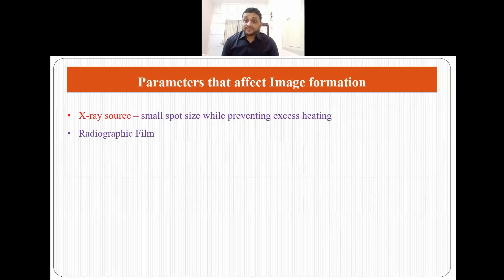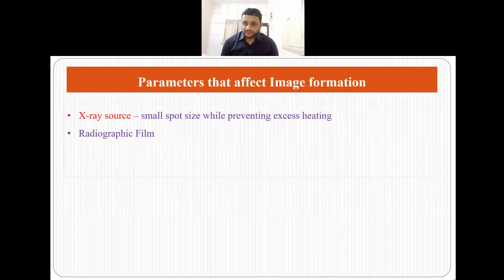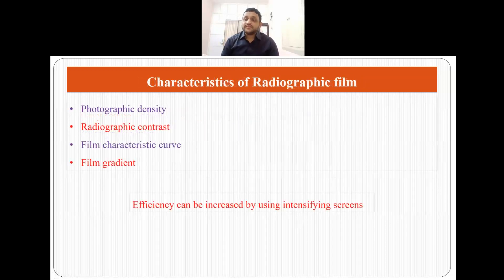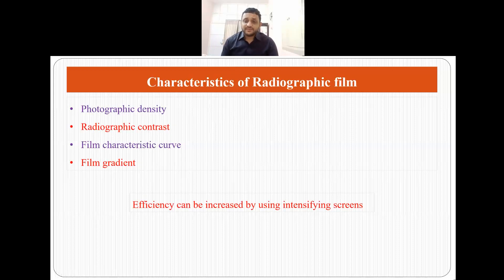Two parameters affect image formation. One is the x-ray source — we want it to be as small as possible but must also prevent excess heating when reducing spot size. The second is the radiographic film. The characteristics of a radiographic film are defined by four major parameters: photographic density, radiographic contrast, film characteristic curve, and film gradient. We can also increase the efficiency of a radiographic film by using intensifying screens.